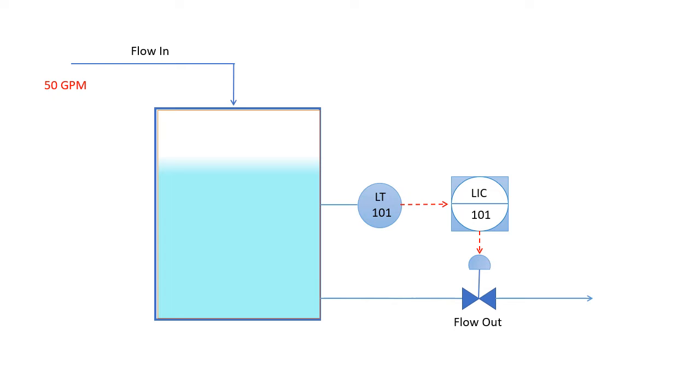Now for example, consider our input is 50 GPM and output is also 50 GPM. At this moment level is held constant at 50 percent, and this is our desired level of the vessel. The valve is open at 50 percent level at this point.